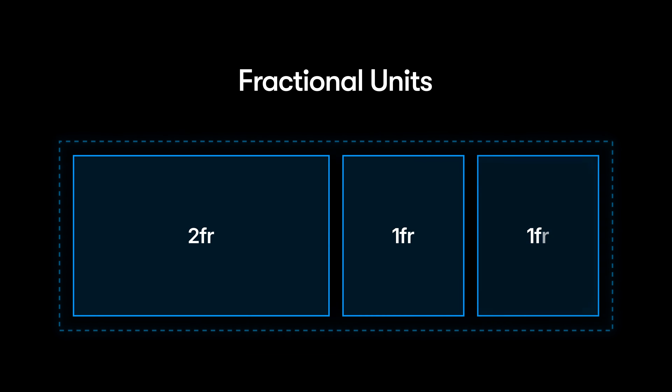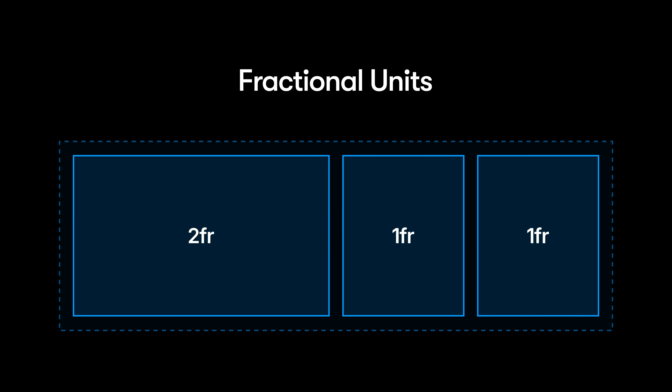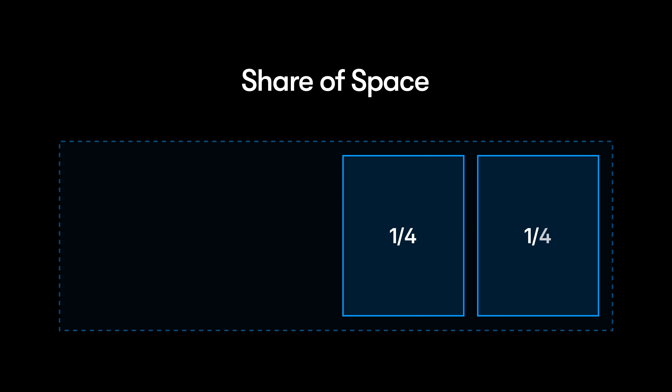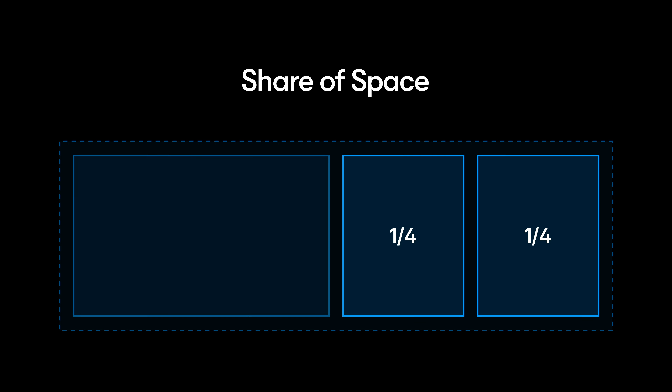What happens if we increase a frame to 2 FR? Intuitively, you may have guessed it would become twice as big as the frame set to 1 FR — and you'd be right. There are now a total of four fractional units being requested: 2 FR plus 1 FR plus 1 FR, or four portions of available space. Which means each of the two 1 FR frames gets one-fourth, and the 2 FR frame gets two-fourths. It's that simple.